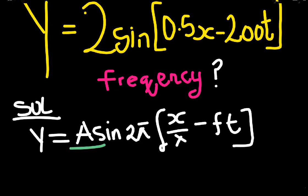The formula for progressive wave is Y = A sin 2π(x/λ - ft).